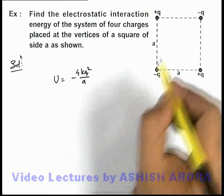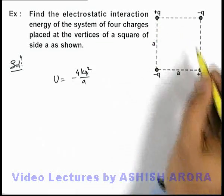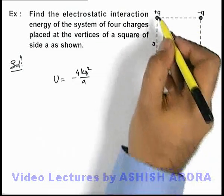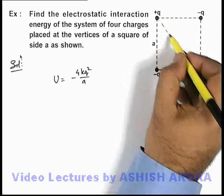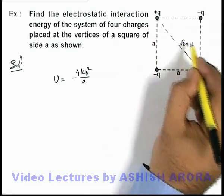Other than this we are having 2 more pairs, one is this and this, other is this and this. So for this pair of particles we can see, the separation is √2a.